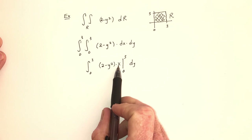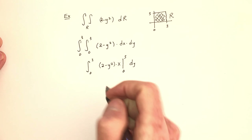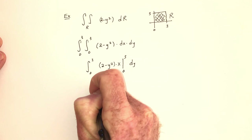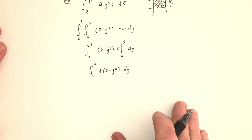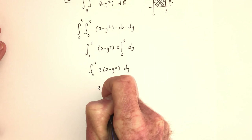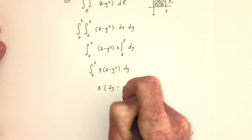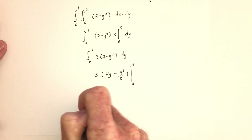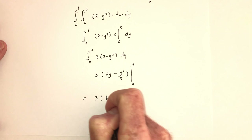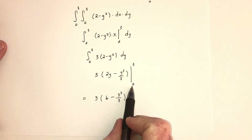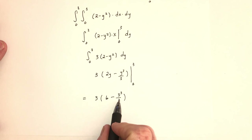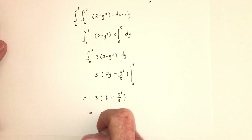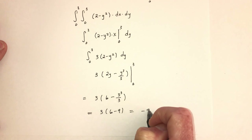Substituting three, it's going to be three times it, and when you substitute zero it's going to be zero. So it's really just three times the quantity two minus y squared, and we need to integrate that from zero to three. I could factor out the constant three, then do the antiderivative: two becomes two y, and y squared becomes y cubed over three. Evaluated from zero to three: that's three times six minus three cubed over three. One of the threes cancels, so that's nine. So it's three times six minus nine, which equals negative nine.